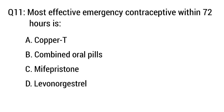Question number 11. Most effective emergency contraceptive within 72 hours is — the right option is option C.